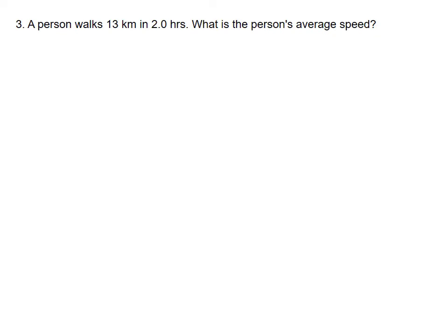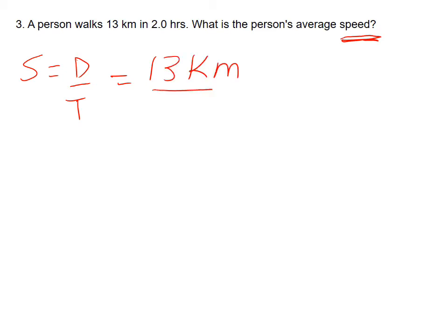Problem 3: A person walks 12 kilometers in two hours. What is the person's average speed? We're calculating speed, so the equation is speed equals distance divided by time. The distance is 13 kilometers divided by a time of two hours. Mathematically, 13 divided by 2 is 6.5, and the units are kilometers per hour.